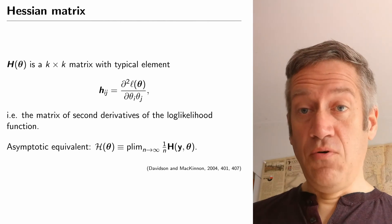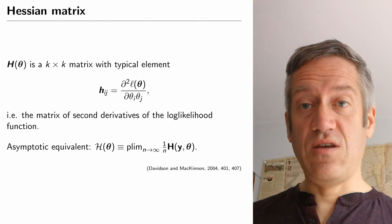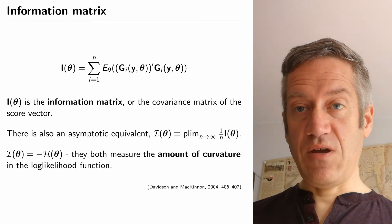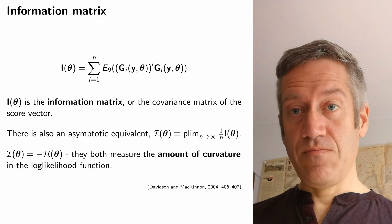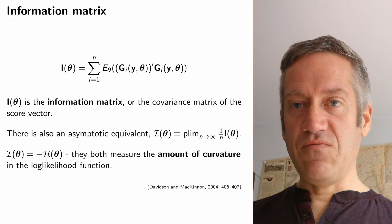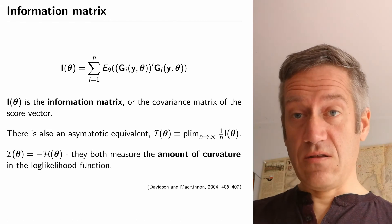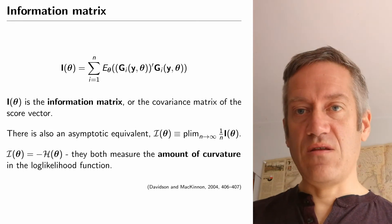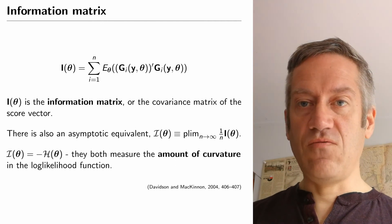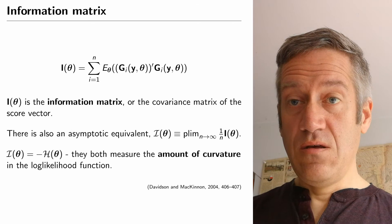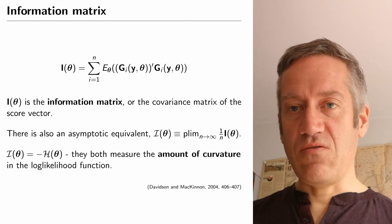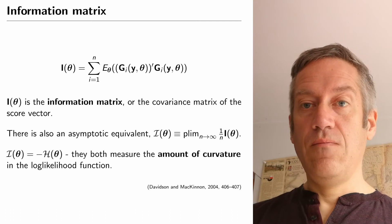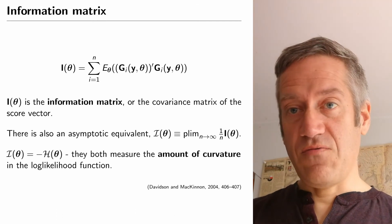The Hessian matrix at the point of the estimated value tells you something about the certainty you have around your estimate. Sometimes you will also see reference to the information matrix, which is the variance-covariance matrix of the score vector of the gradient. There is a clear relationship between the Hessian matrix and the information matrix: asymptotically, as the sample size gets large, the information matrix is the negative Hessian matrix. So both tell you similar information — something about the amount of curvature at any point in the likelihood function and, at the maximum likelihood point, the level of uncertainty.